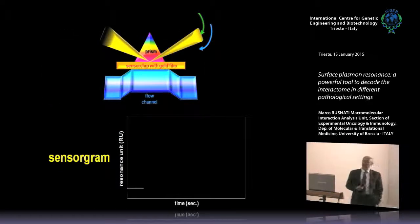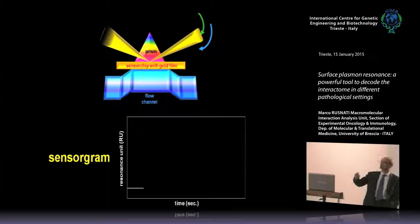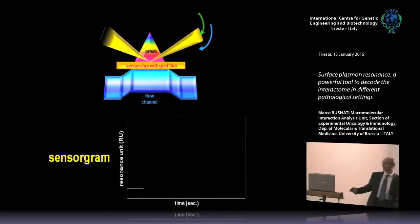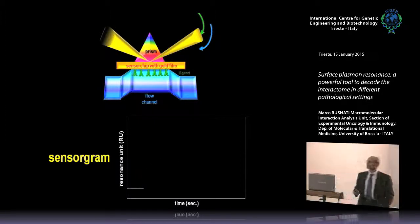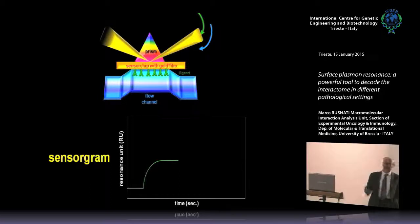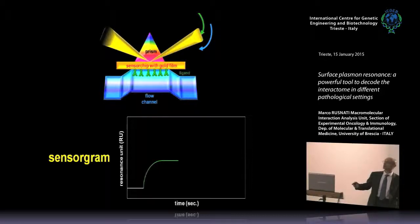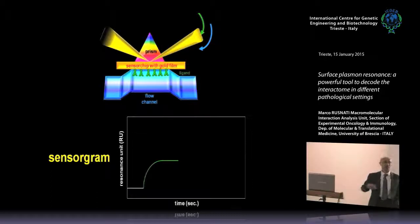In the SPR apparatus there is embedded software that transforms this modification of the resonance angle of the refractive index into something that we call a sensorgram. A sensorgram is a graph in which, as a function of time, we report the increase of resonance units bound to the sensor chip — bound to the gold film. When we immobilize the first molecule, the ligand, we observe an increase of RU units that is irreversible, because the immobilization of the ligand to the gold film is obtained chemically and is irreversible. So we have generated a new baseline.